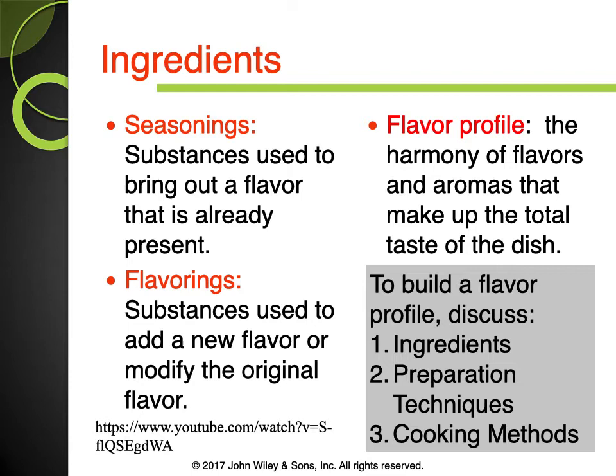Seasoning: substances used to bring out a flavor that is already present. Versus flavoring: substances used to add a new flavor or modify the original flavor. So seasoning brings out flavors already present, while flavoring changes or modifies the flavor of the product.